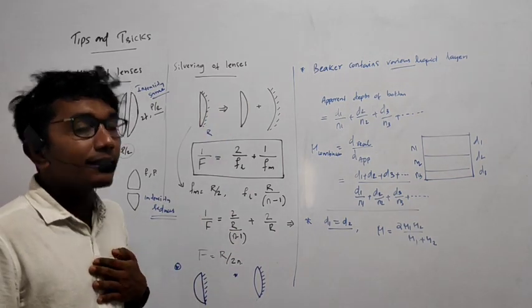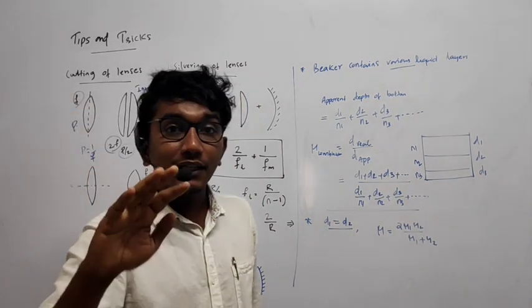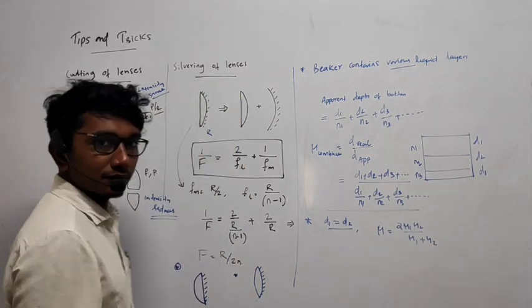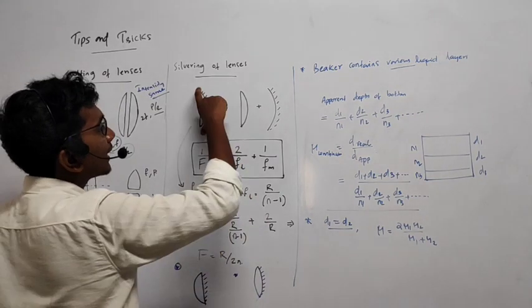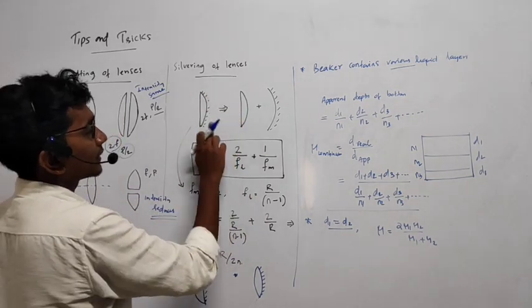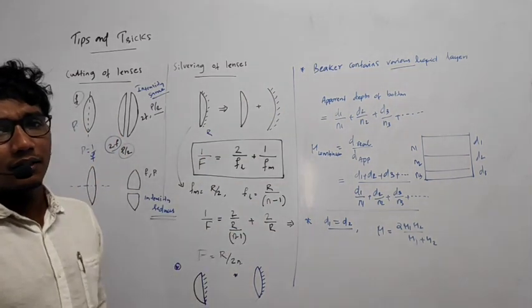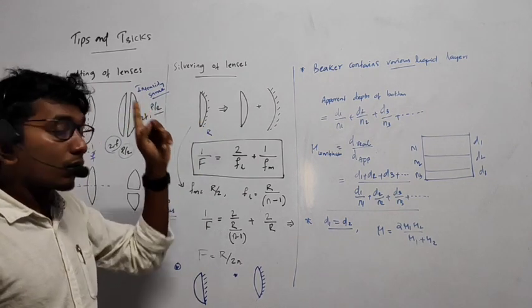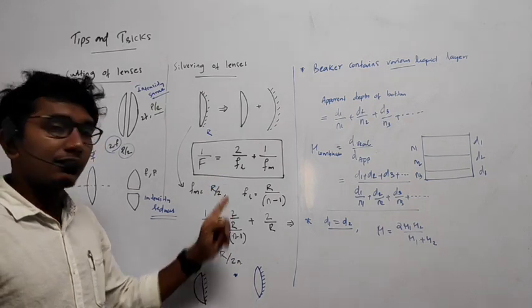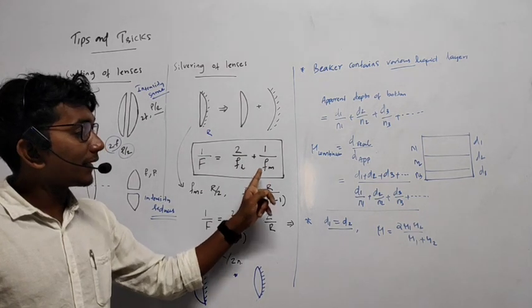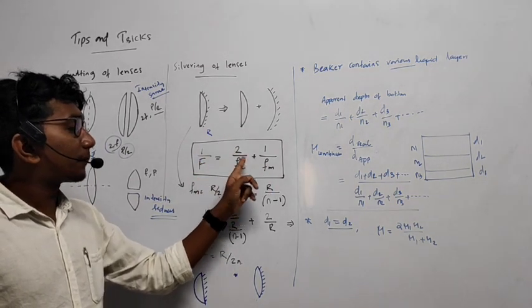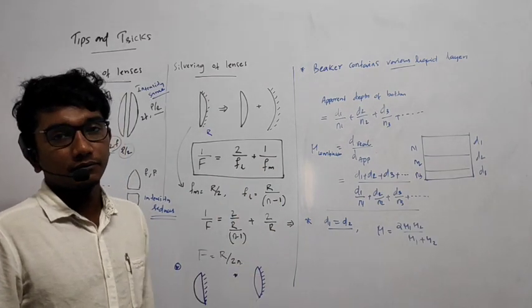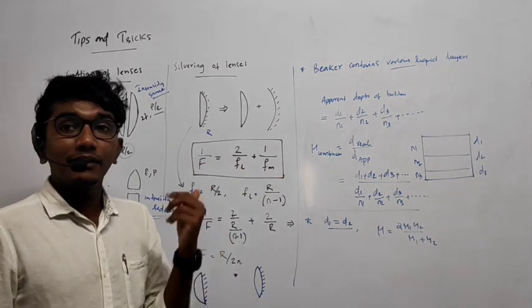So what is silvering of a lens? Here we have a plano-convex lens. If you silver the convex part, you get a combination of a lens plus a mirror — and that mirror is a convex mirror. The combination has a focal length given by: 1/f = 2/f_L + 1/f_M, where f_L is the focal length of the lens and f_M is the focal length of the mirror.